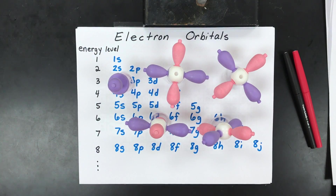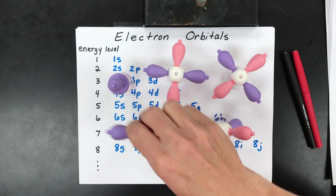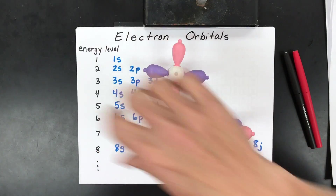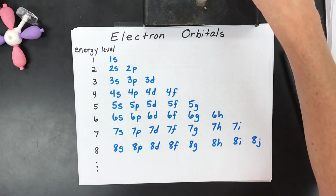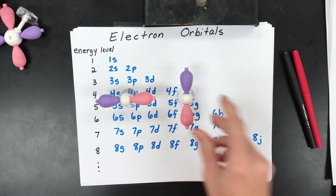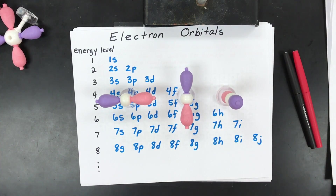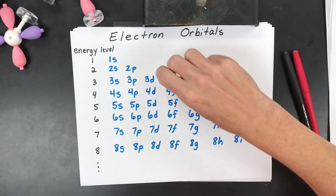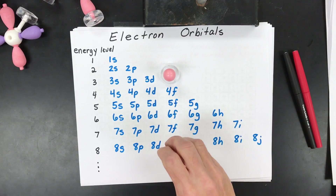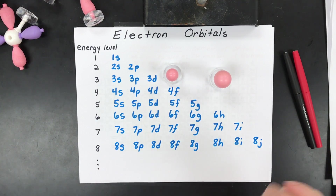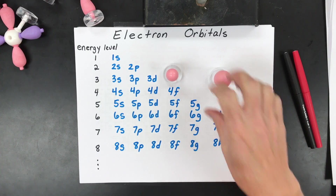Those are the five possible d orbitals. In the previous video I drew p orbitals — there are three possible p orbitals, one going that way, one going that way, and one going up and down. An s orbital only comes in a sphere shape; a 1s would be smaller and a 2s would be larger.